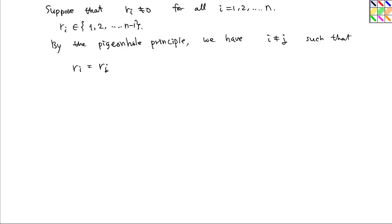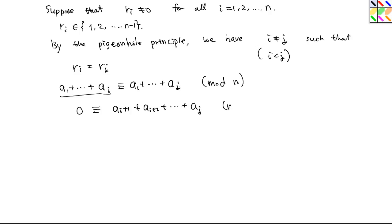But this means, let's suppose that i is less than j. That means a1 + ... + ai is congruent to a1 + ... + aj modulo n, because they have the same remainders. But now if we subtract both sides by a1 + ... + ai, we get 0 congruent to a(i+1) + a(i+2) + ... + aj modulo n.